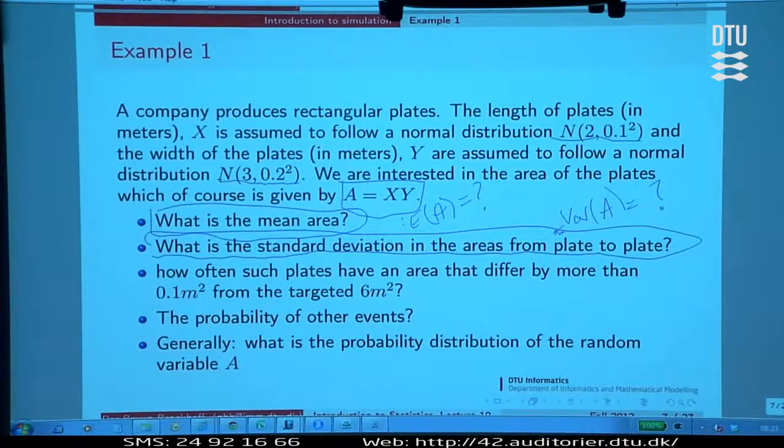What if I'm interested in a more subtle consequence of the system, a more subtle feature of the system, like how often does the area differ from the target of six square meters by more than 0.1 square meter? How often does that event happen? That could be something. How often does it cost some money? If I have to stay within these limits to get this price, how often do I get out of these limits? That has a consequence for the price I can achieve for the plates that I'm producing.